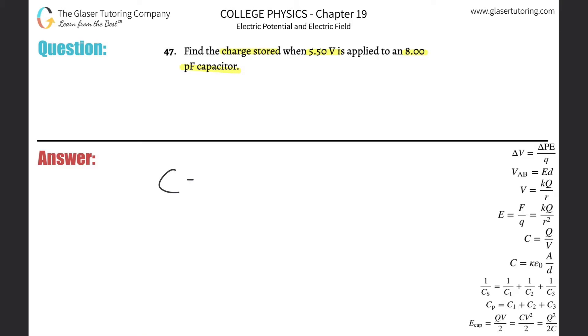It says that the capacitance of a capacitor is equal to the charge that's applied across the capacitor divided by the voltage that's applied across that capacitor. So in order for me to find the charge that's stored, I can just simply do a cross multiplication where it's going to be the capacitance times the voltage.